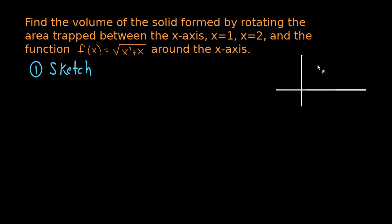I like to do the easy parts first. x equals 1 is just a vertical line at x equals 1, and x equals 2 is a vertical line. Those are easy and the x-axis is already drawn for us, so now we just have to worry about this function.